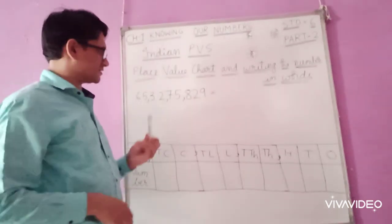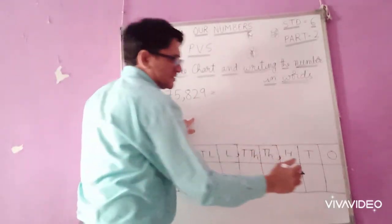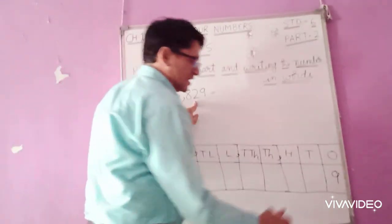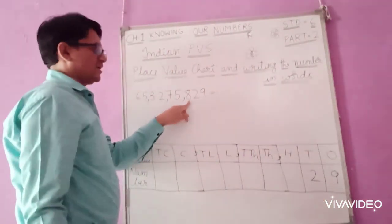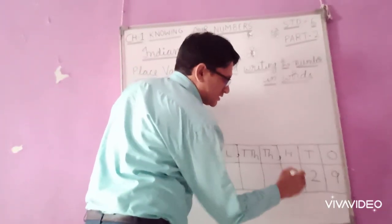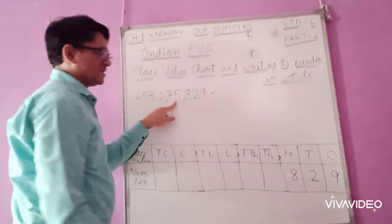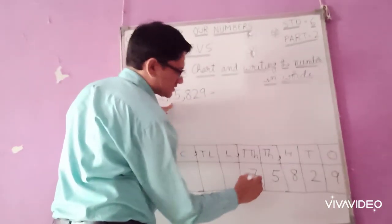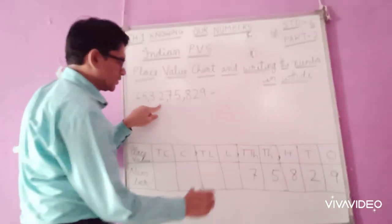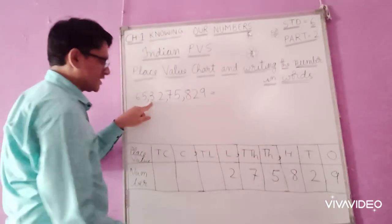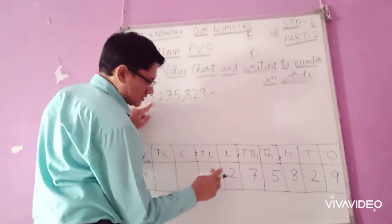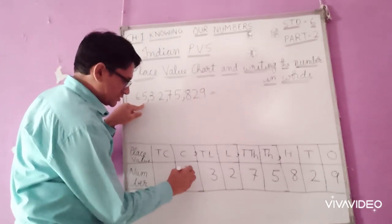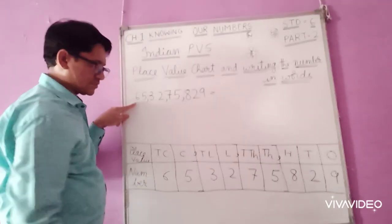Now, placing digits into the chart: 9 is in ones place, 2 in tens place, 8 in hundreds place, 5 in thousands place, 7 in ten thousands place, 2 in lakhs place, 3 in ten lakhs place, 5 in crores place, 6 in ten crores place.